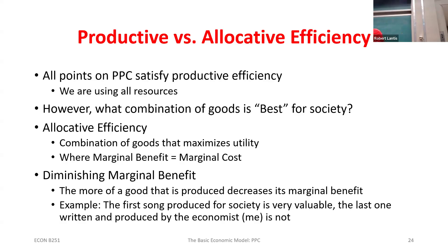The slope will always be negative when talking about costs because costs are inherently negative — you wouldn't say it cost you negative ten dollars to go to Chipotle, it cost you ten dollars. So we know there's always going to be a trade-off and the slope is always negative. As we produce more and more, our marginal cost is increasing.